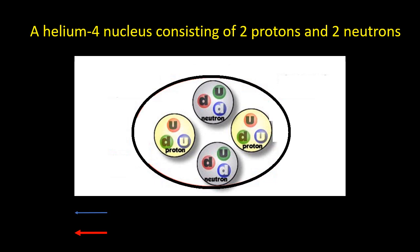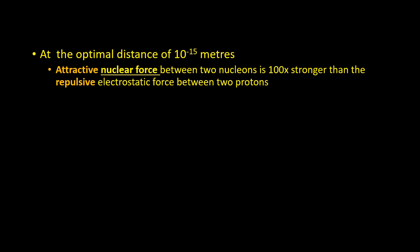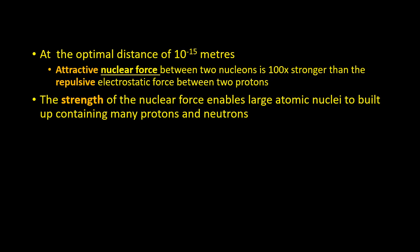As an example of the nuclear force, let's consider a helium-4 nucleus, two protons and two neutrons. The blue lines show the repulsive force between the two protons, pushing them apart. The red lines show the much stronger nuclear force holding all the nucleons together. At the optimal distance of 10 to the minus 15 meters, the attractive nuclear force between two nucleons, for example a proton and a neutron, is 100 times stronger than the repulsive electrostatic force between two protons. The strength of the nuclear force enables large atomic nuclei to be built up containing many protons and neutrons.